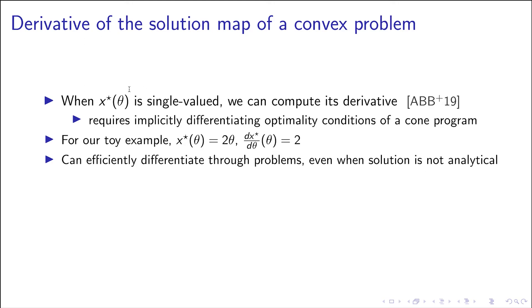So assuming that there is a unique solution, we can compute the derivative dx/dθ. And we do this by implicitly differentiating the optimality conditions, such as the KKT conditions of a cone program. In our toy example we have x* = 2θ, and so we know dx/dθ = 2. This is analytical, but our system does this for any problem you can write down in CVXPy with a few restrictions.